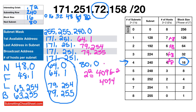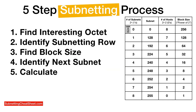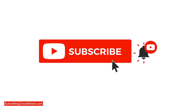So that's the five-step subnetting process: identify the interesting octet, identify the subnetting row, find the block size, identify the next subnet, and then calculate. Very easy. Thanks so much for watching.